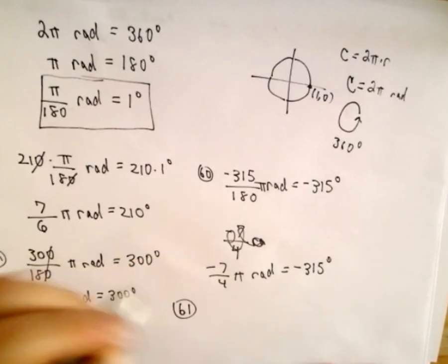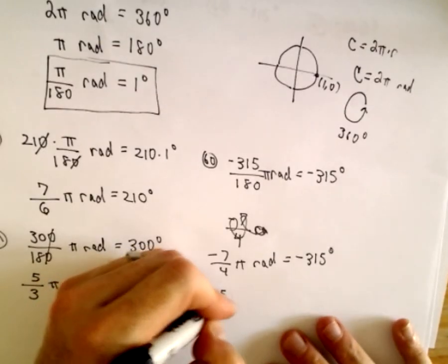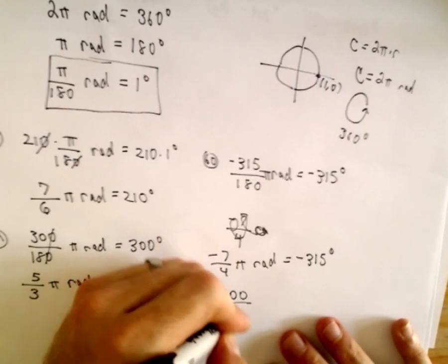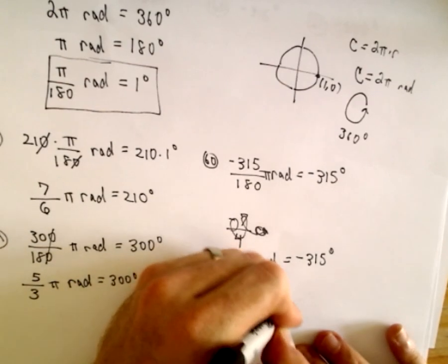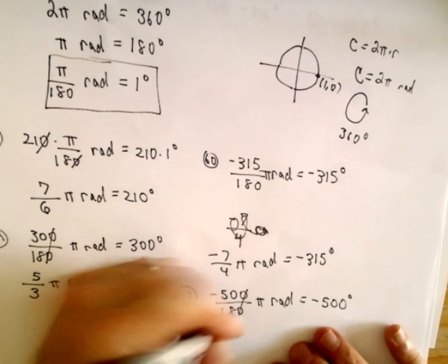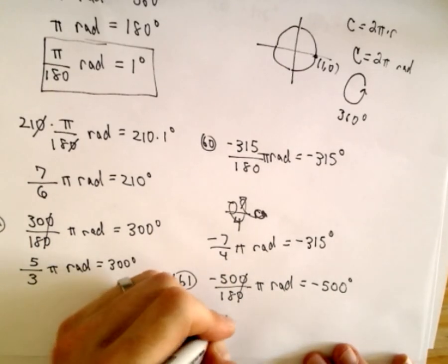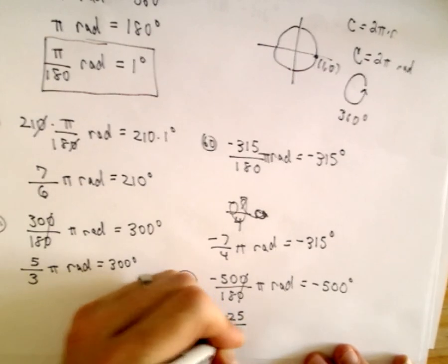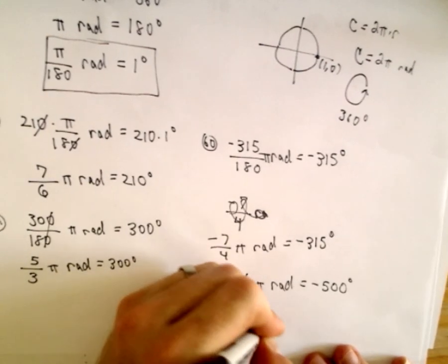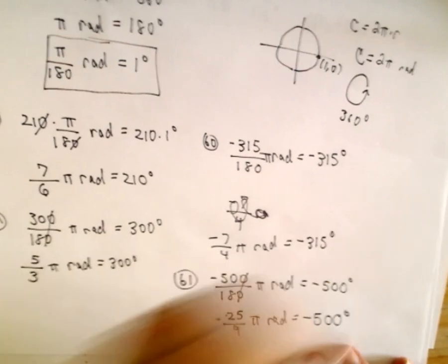Last but not least, 61. If we multiply both sides by negative 500, we'll have negative 500 divided by 180 pi radians. That's going to equal negative 500 degrees. Again, get rid of the zeros. Those are both even. So let's see, we could divide by 2. That'll be negative 25 divided by 9 pi radians. That's going to be equal to negative 500 degrees.